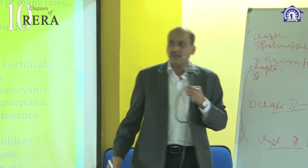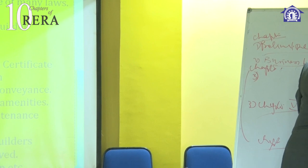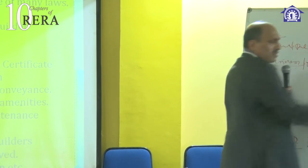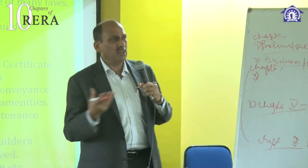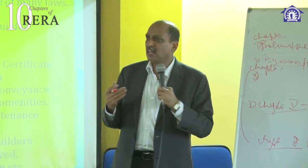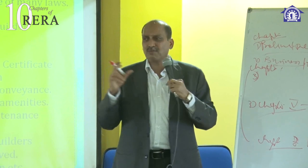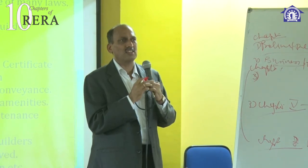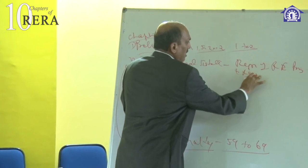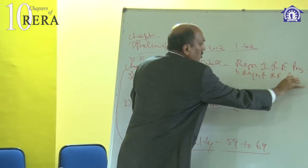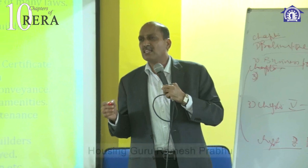Chapter number two covers real estate projects, sections 3 to 8. When marketing a real estate project, we also need the help of real estate agents, who are also part and parcel of the real estate business. If an agent gives wrong information, that should not happen. So chapter number two also covers registration of a real estate agent — section 9 and 10, talking about the various real estate agents and their duties.